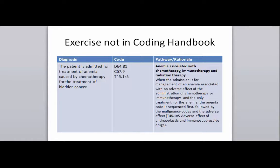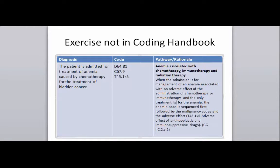The next exercise not in the coding handbook: a patient is admitted for treatment of anemia caused by chemotherapy for the treatment of bladder cancer. We have a guideline that directly addresses anemia associated with chemo — coding guideline 1C2C2. When the admission is for management of anemia associated with an adverse effect of the administration of chemo or immunotherapy and the only treatment is for the anemia, the anemia code is sequenced first, followed by the malignancy codes and the adverse effect code. The T45.1x5 is already given to us as one of the codes we're going to use.